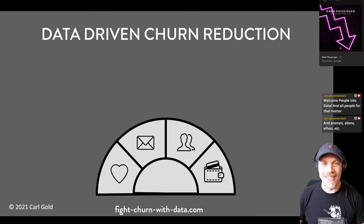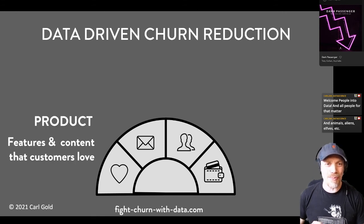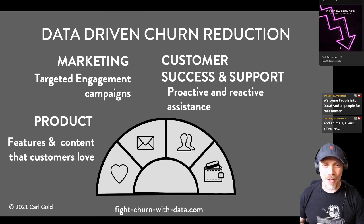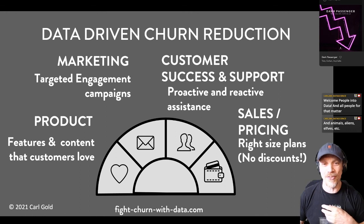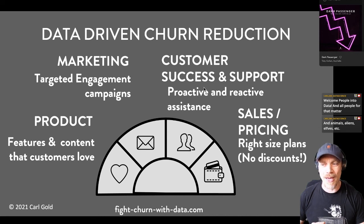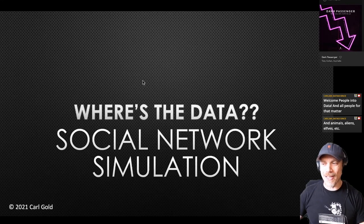So what does 'fighting churn with data' really mean? It's data-driven churn reduction, which is the goal of everything you do with data for churn, because it's not an academic exercise. You want to improve your product, reach out to your customers, give them support and the love they need at the right times in their customer journey, and also have a good pricing plan — so you get value from your customers and to your customers, but without discounting, because fighting churn is not really about giving out discounts.